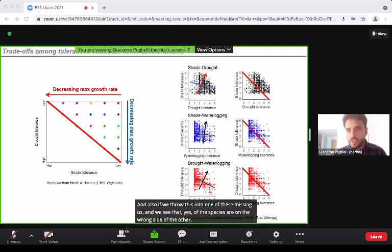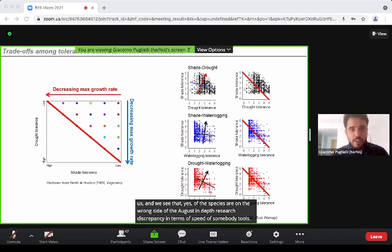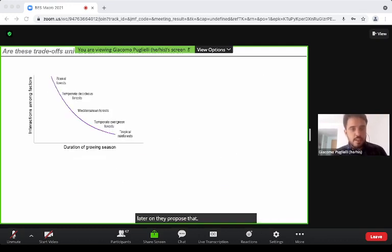The authors interpret such discrepancy in terms of species' ability to avoid the constraints imposed by biological trade-offs through adaptations. Later on they propose that this might depend on an additional dimension.